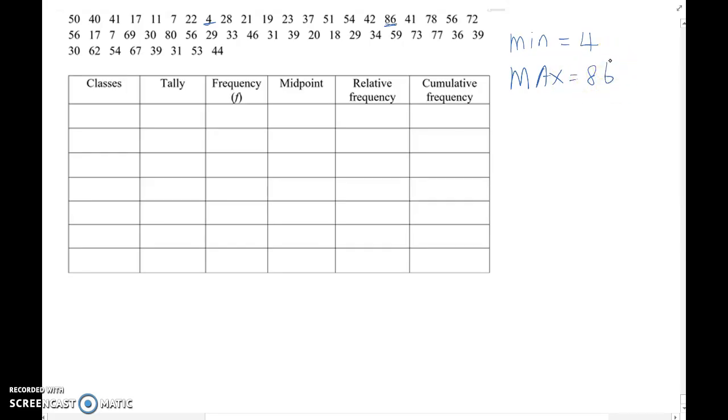So now, we need to create 7 classes frequency distribution table. So you need to find out class range. This is how you find class range here: maximum minus minimum over number of classes.